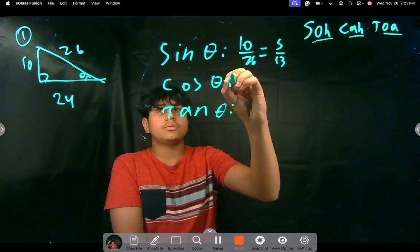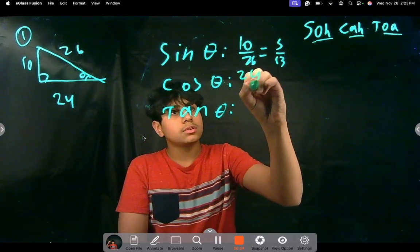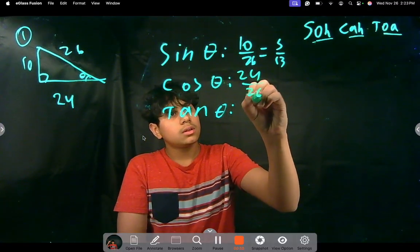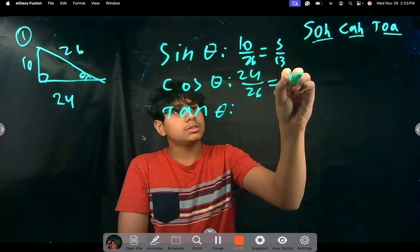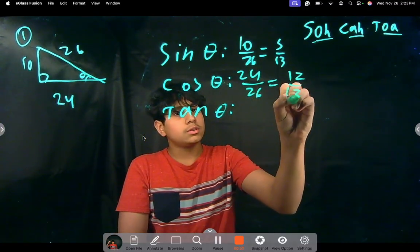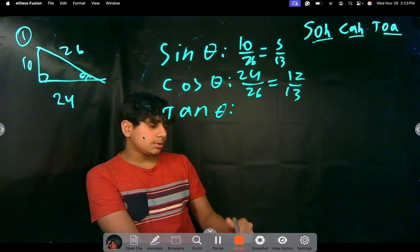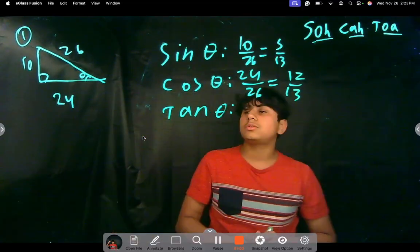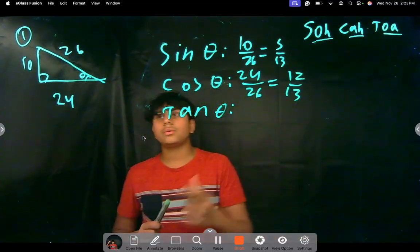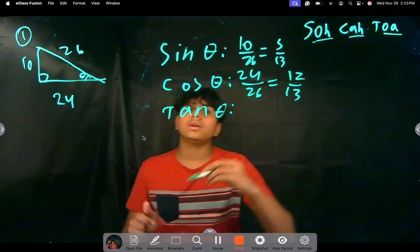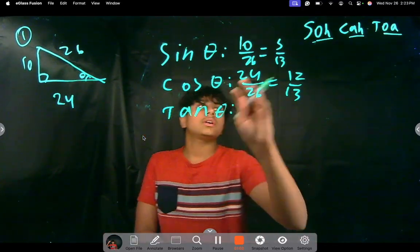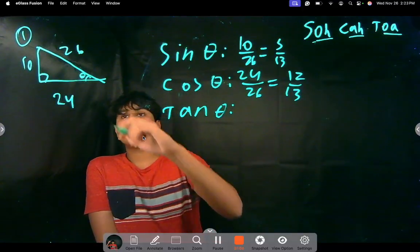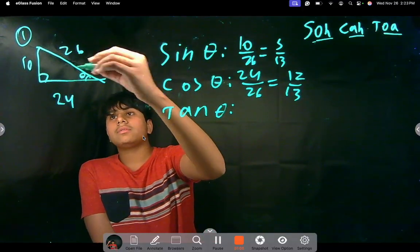Cosine theta is adjacent over hypotenuse, so that's 24 over 26, which simplifies to 12 over 13. For tan theta, there are two ways to do this — I'll show you both. The first way is to use the abbreviation: opposite over adjacent.